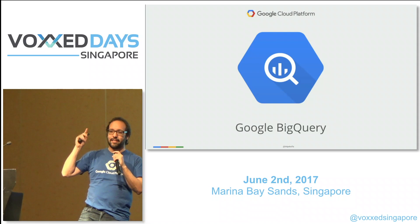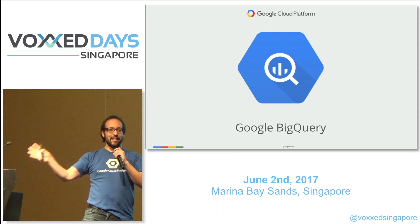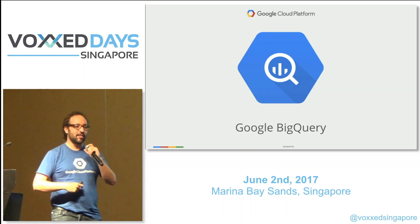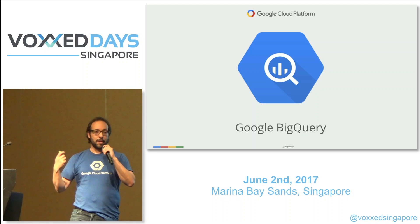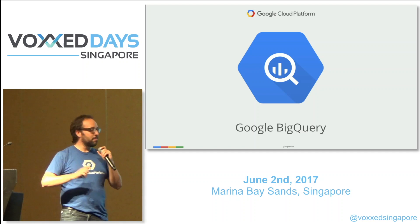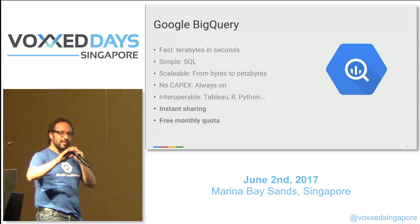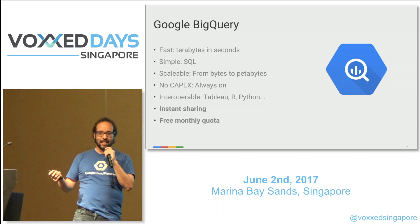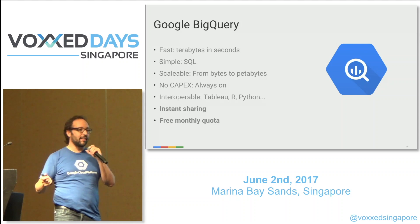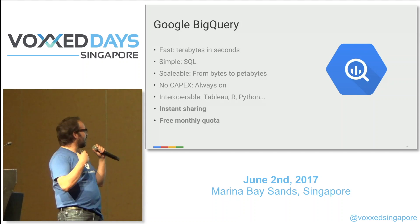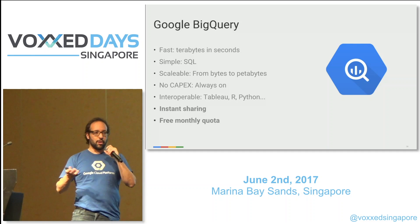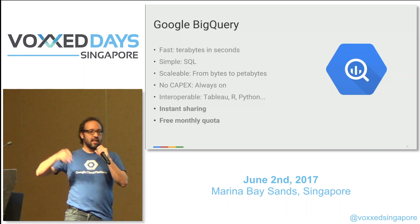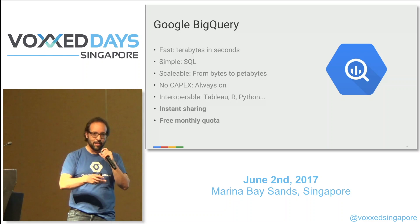When you want to share data at that scale, you have to look at a different way of doing things. That was back in 2012 when we were also opening up Google BigQuery. BigQuery is a cloud analytical database — it's fast, it analyzes terabytes in seconds. You just need to know SQL to use it. It scales from bytes to petabytes — it doesn't matter how much data you have. You can just put it there and analyze it. And it's always on — no servers to turn on, no RAM to manage.